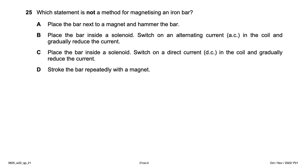Which statement is NOT a method for magnetizing an iron bar? Placing the bar next to a magnet and hammering it aligns the domains — valid. Stroking with a magnet — valid. Placing inside a solenoid with direct current gradually reduced — valid. But placing the bar inside a solenoid with alternating current gradually reduced does NOT magnetize it, because AC continuously reverses and doesn't align the domains — option B is the wrong method.